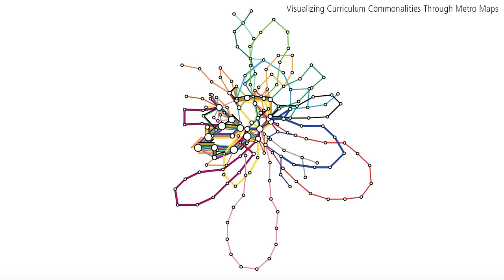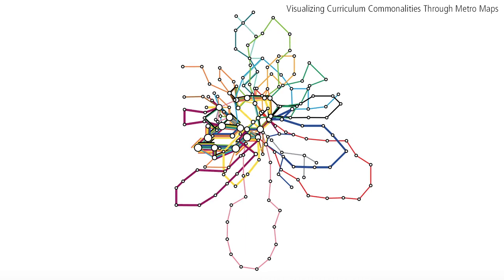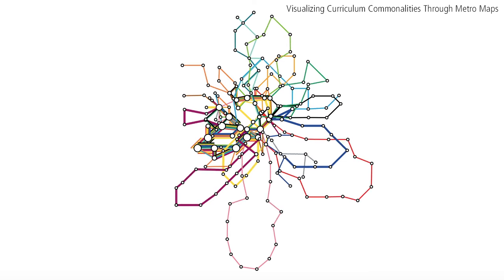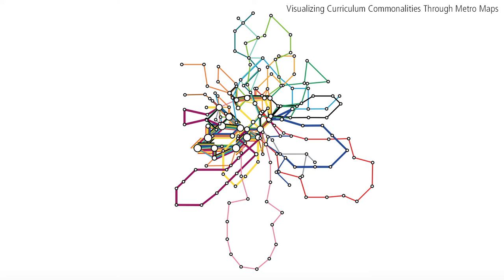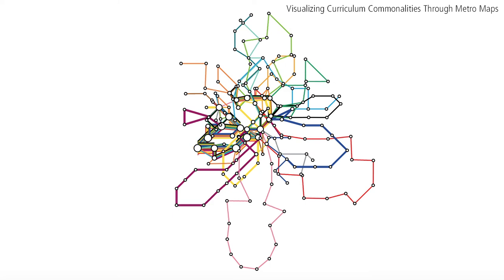Ideally, the graph's nodes would continue to be moved until the graph's overall score does not change, letting us know that the resulting map cannot be improved further. In practice, that would take too long to calculate, so we take our final product to be the coordinates produced after 50 to 100 iterations of the algorithm. One iteration of the algorithm consists of every station in the graph having been evaluated and potentially moved once.